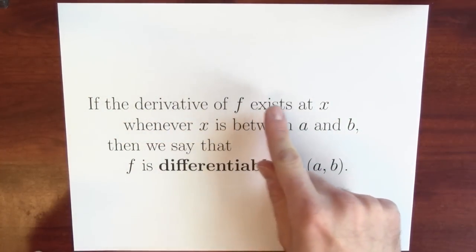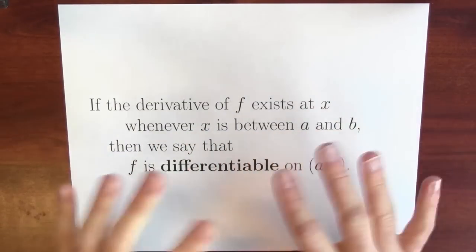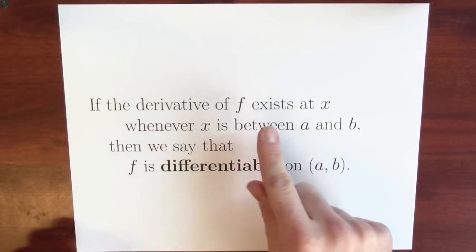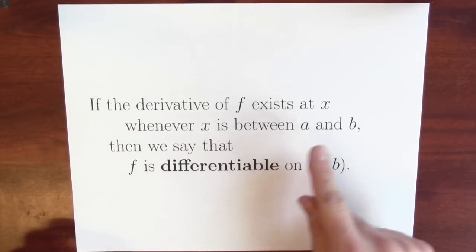If the derivative of f exists at x whenever x is between a and b, but not at a or at b - we won't worry about that - just whenever x is between a and b. If this happens, then we say that f is differentiable on the interval (a,b).